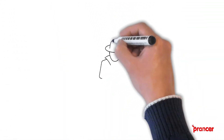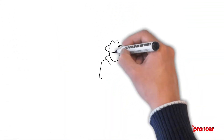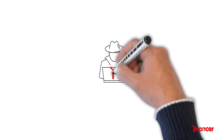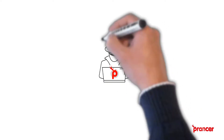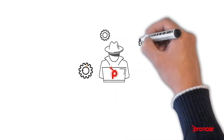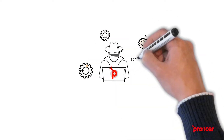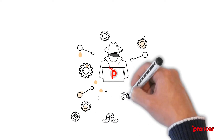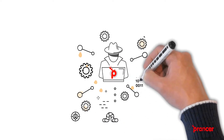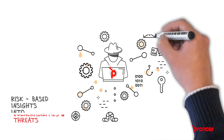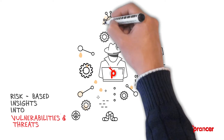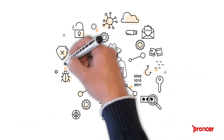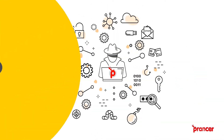Prancer has developed an automated pen test solution that uses its patented technology to model actual attack behaviors as code. This new technology offers earlier detection than manual penetration tests and more accurate results in less time. It provides risk-based insights into vulnerabilities and threats so companies can take action before it's too late.